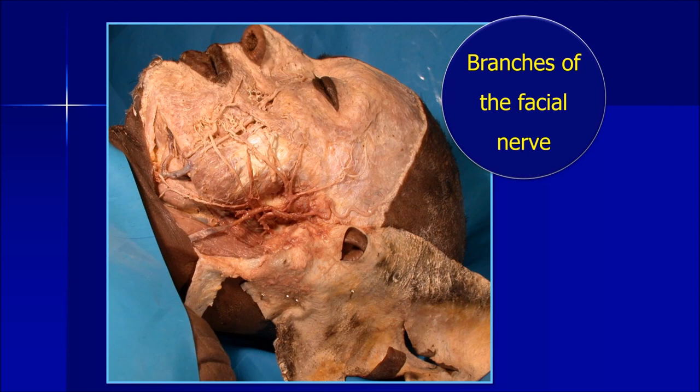Here is a specimen where the parotid gland has been removed to show the facial nerve in full continuity. You can see the stem of the facial nerve, and its branchings — we will come to that a little later. But let's go from what we have already seen in the previous discussion, namely put the parotid gland digitally back and then review the emerging nerves.